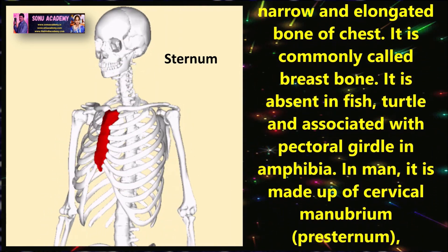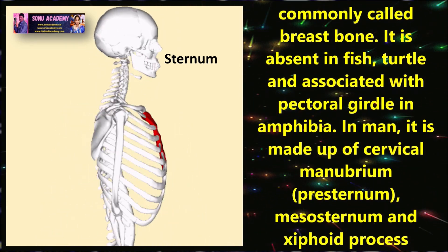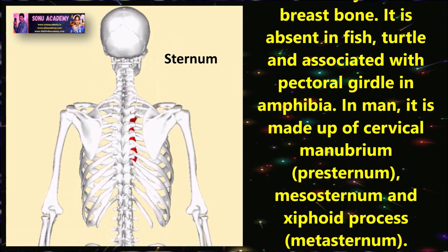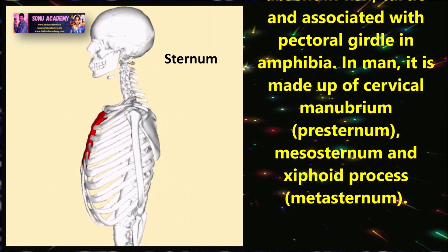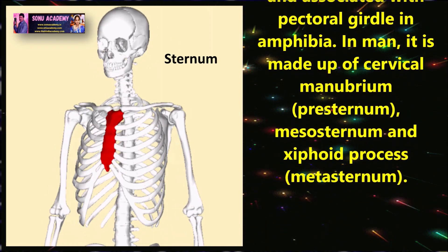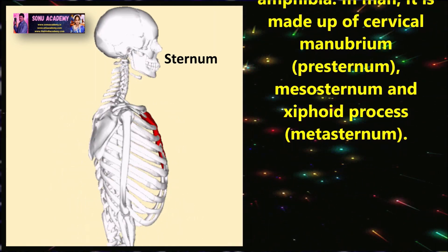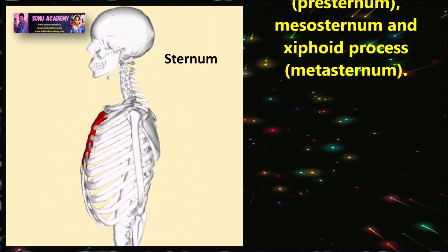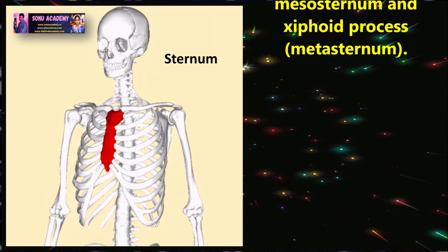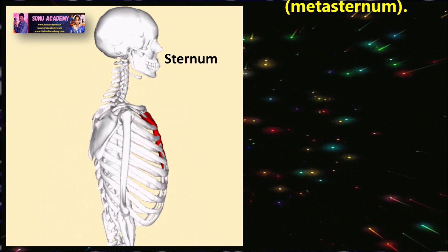It is absent in fish and turtle, and is associated with the pectoral girdle in amphibians. In man, it is made up of the manubrium, meso-sternum, and xiphoid process.